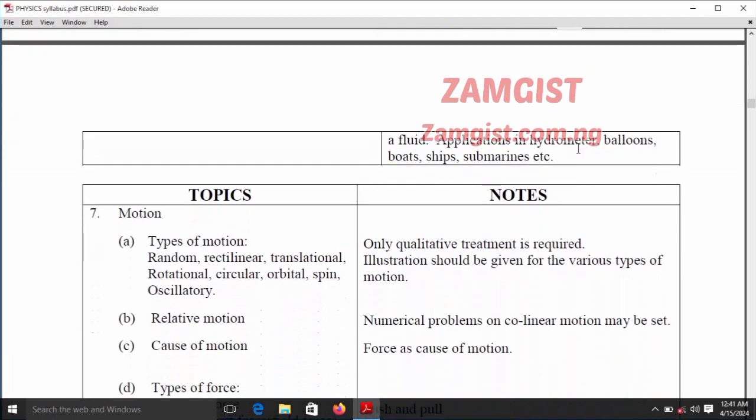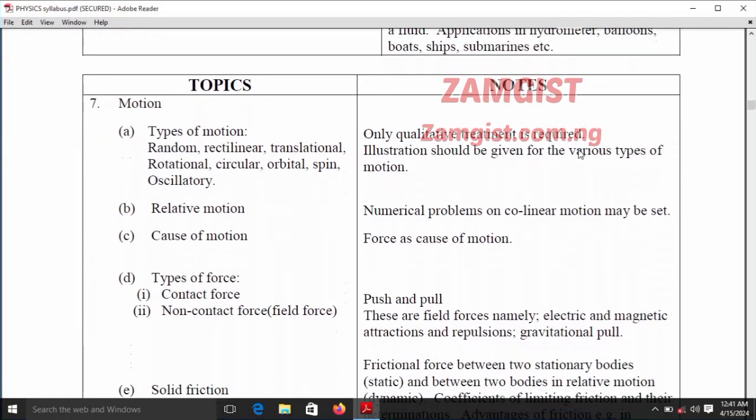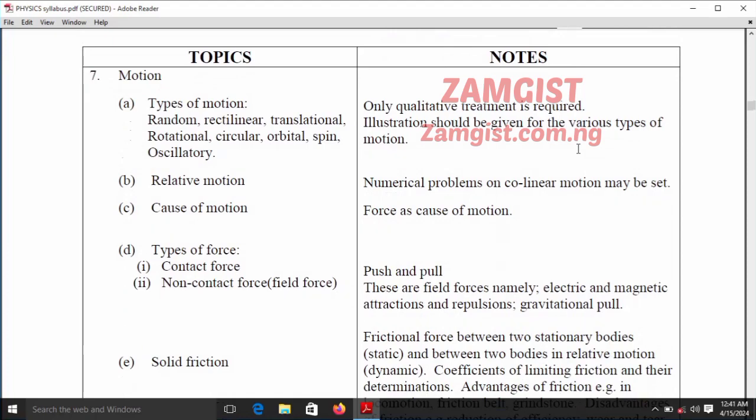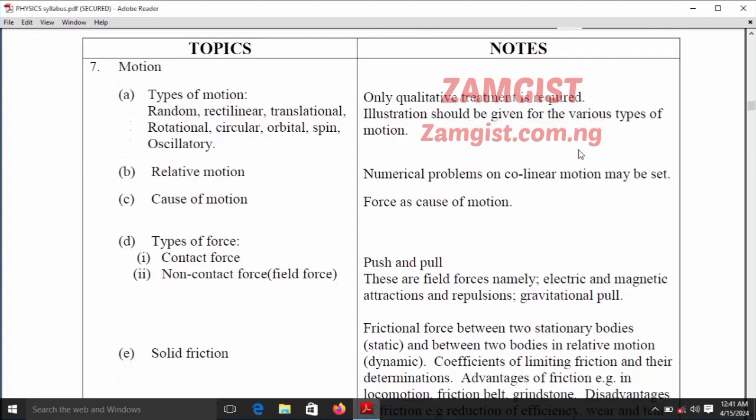The next topic is motion. Under motion, you should try and study the types of motions: random, rectilinear, translational, rotational, circular, orbital, spin, and oscillatory.